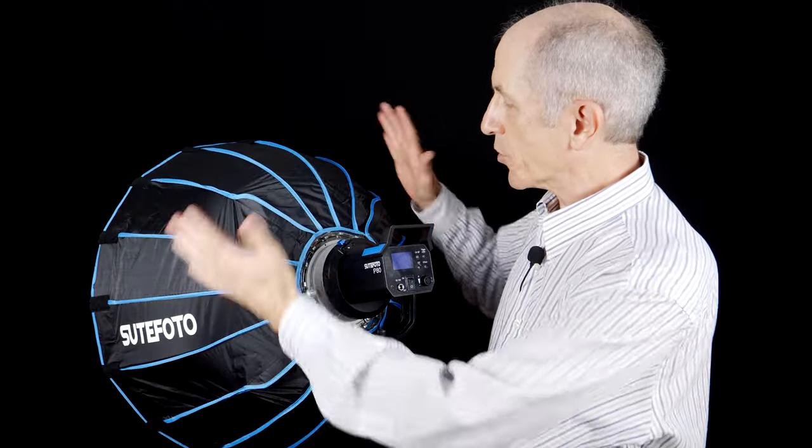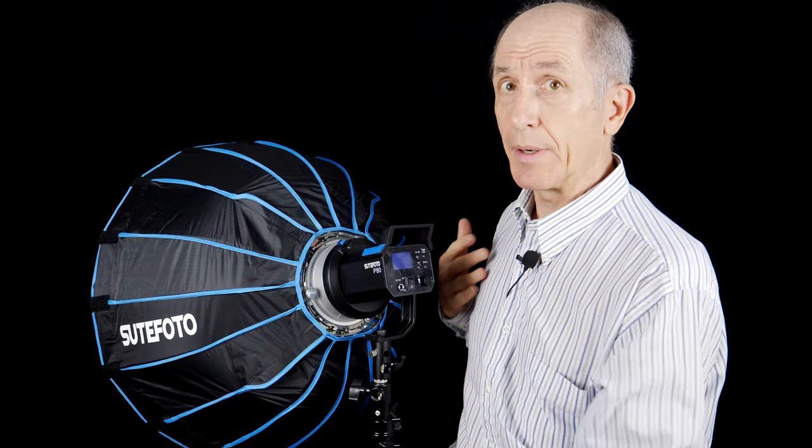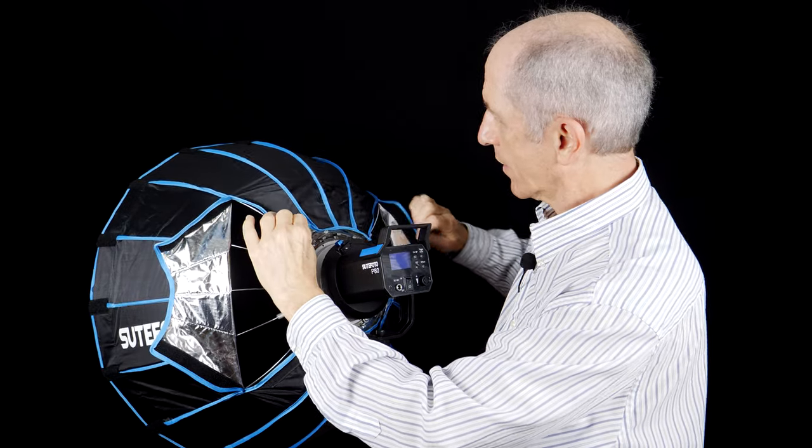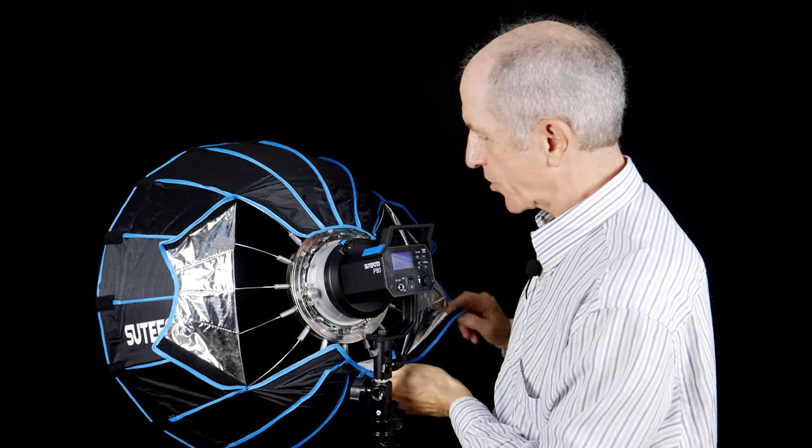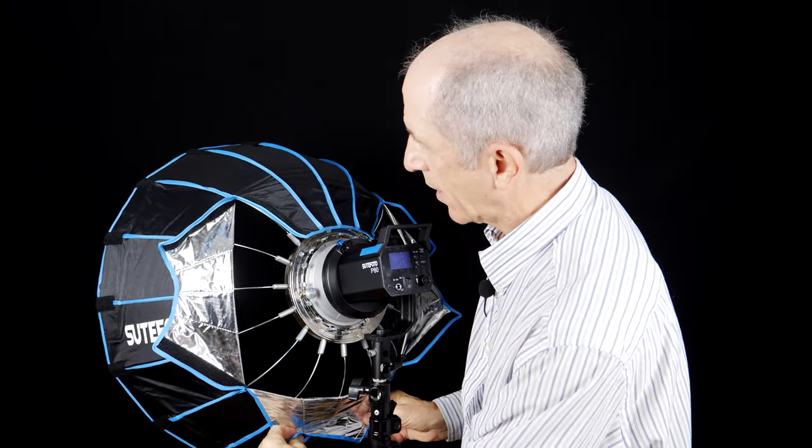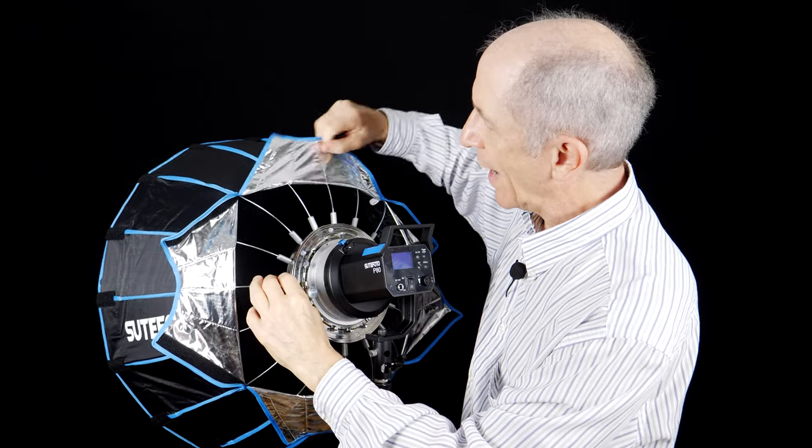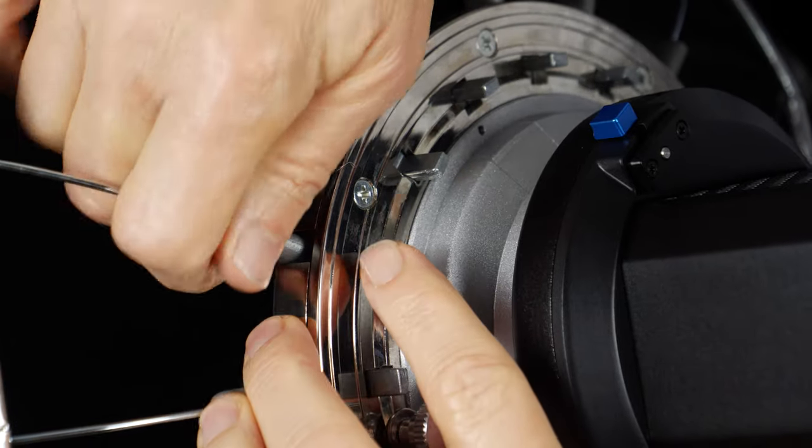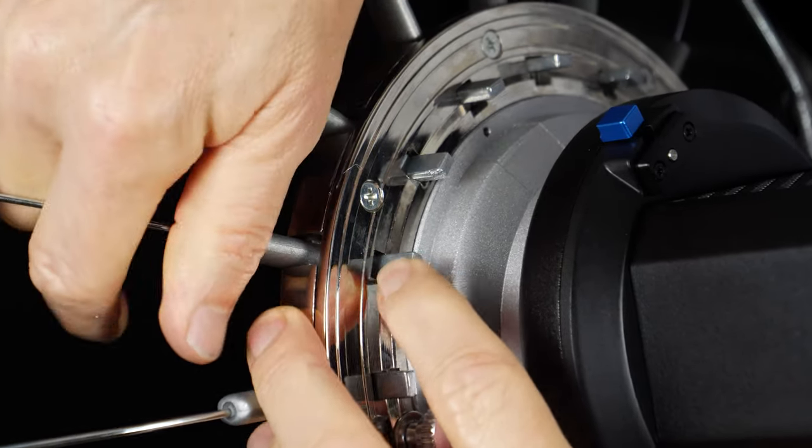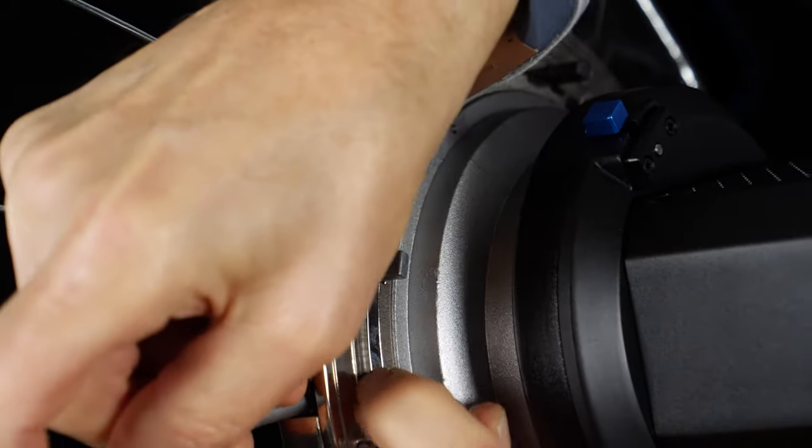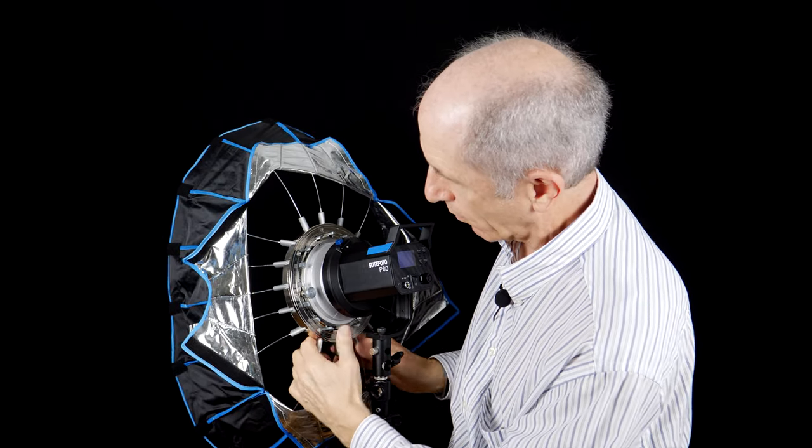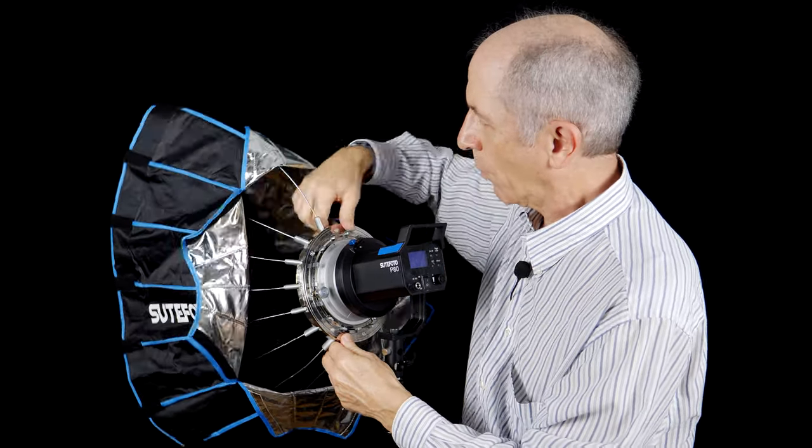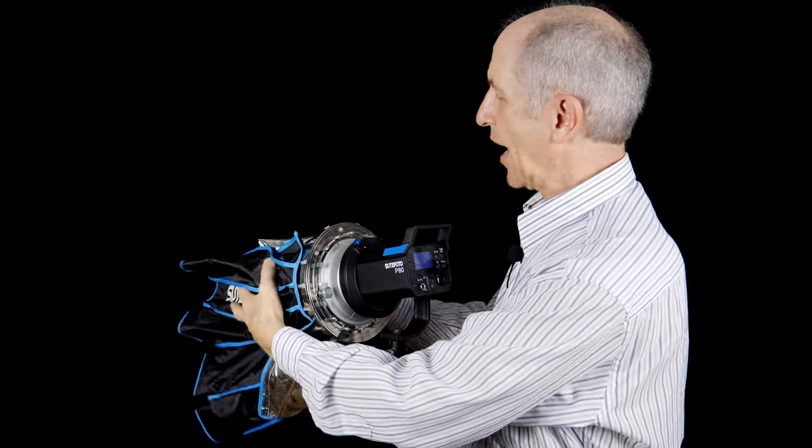Now that this is mounted on the light, how do we collapse it? Well, it's not hard, really. Undo everything, peel back these hook and loop fasteners. And what you need to do now is to pull back on the rib and press the tab to release each rib. And now you can collapse it.